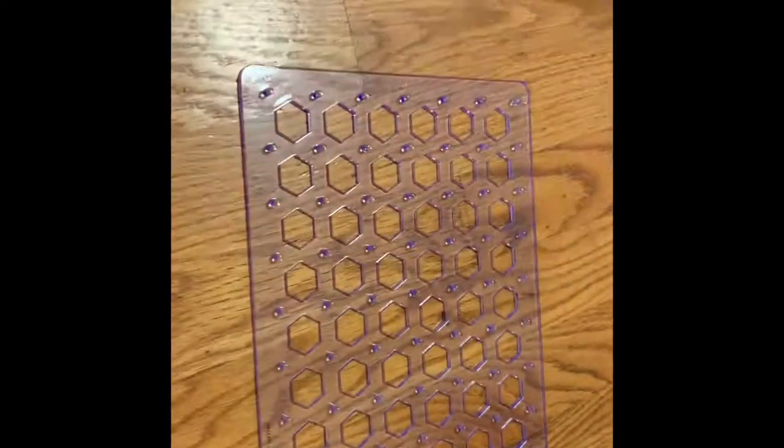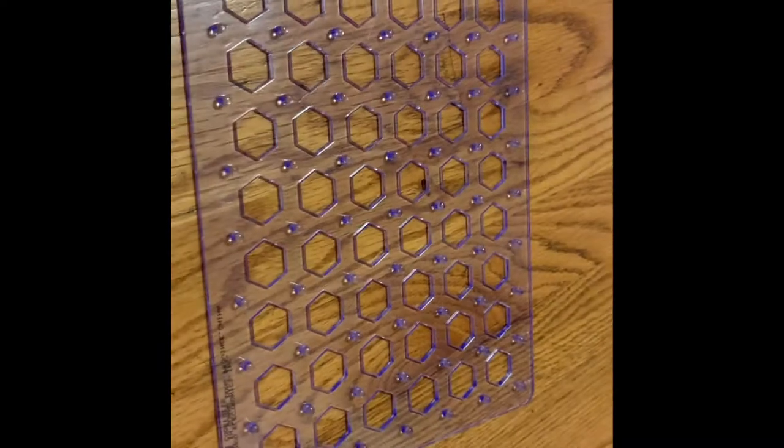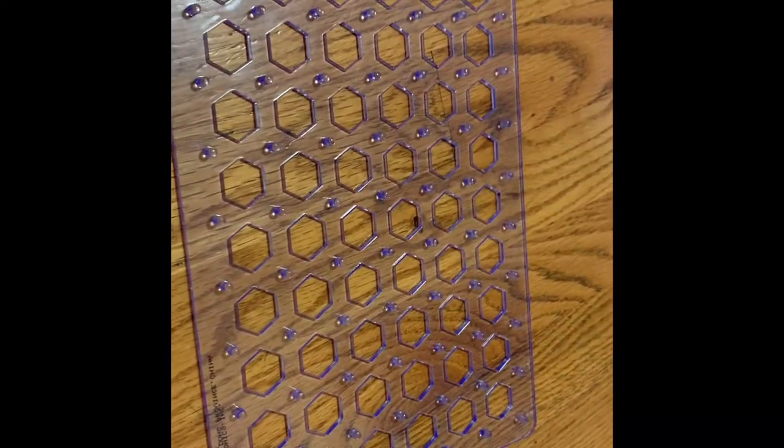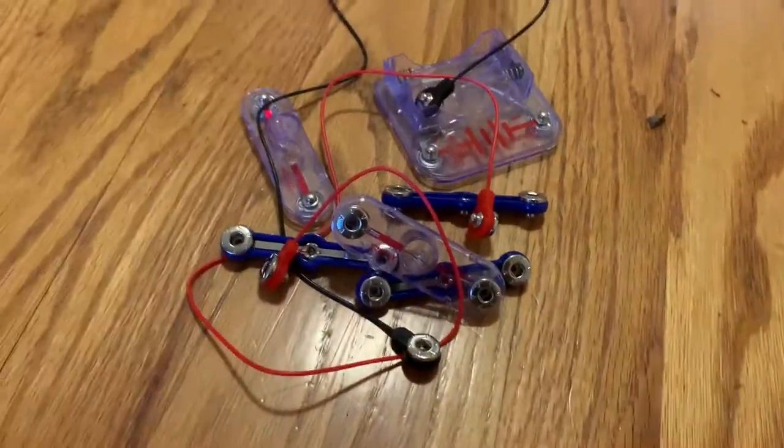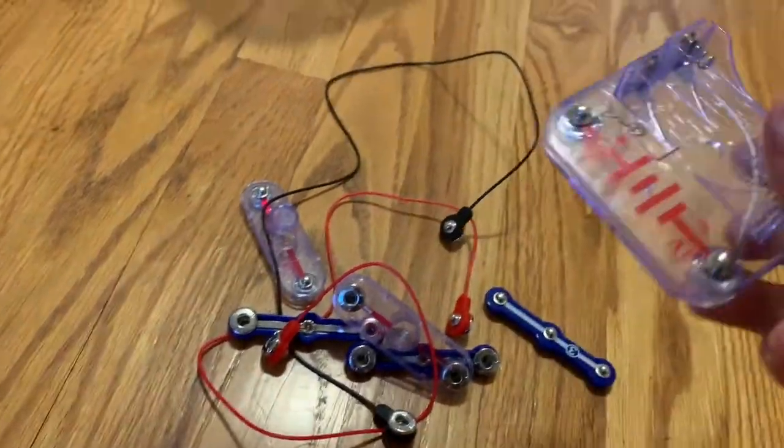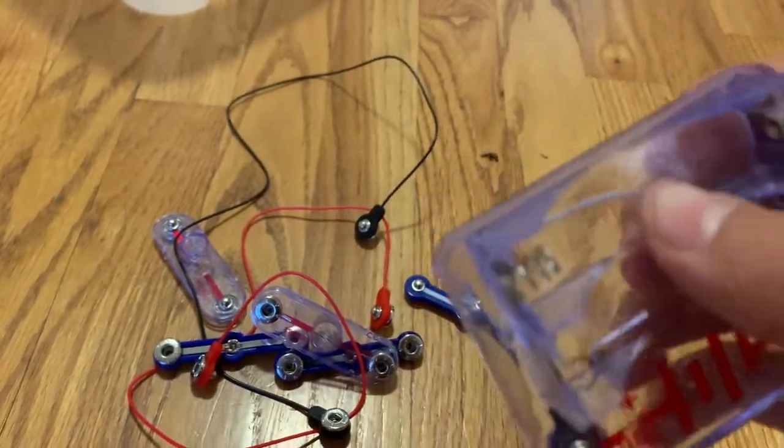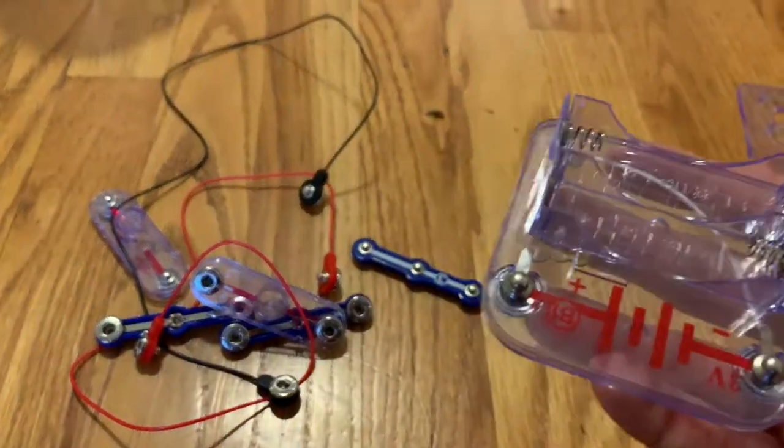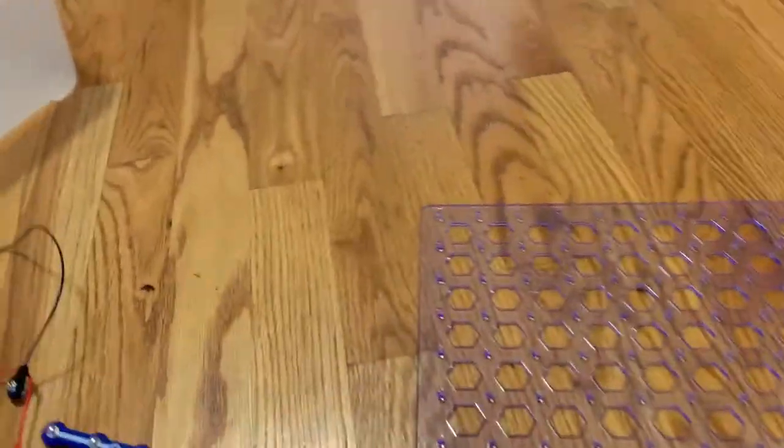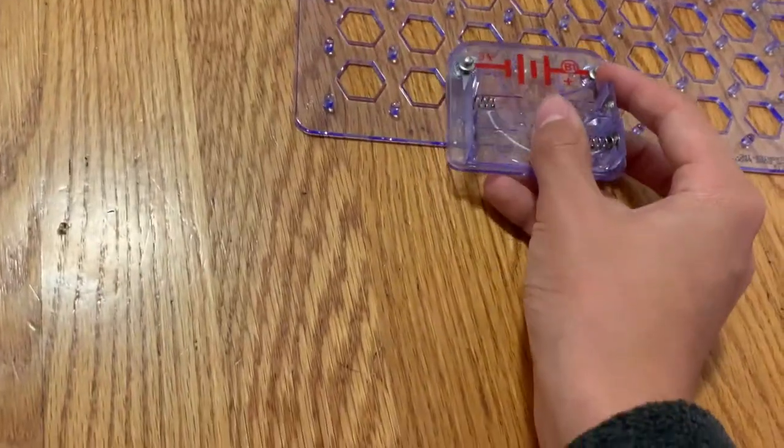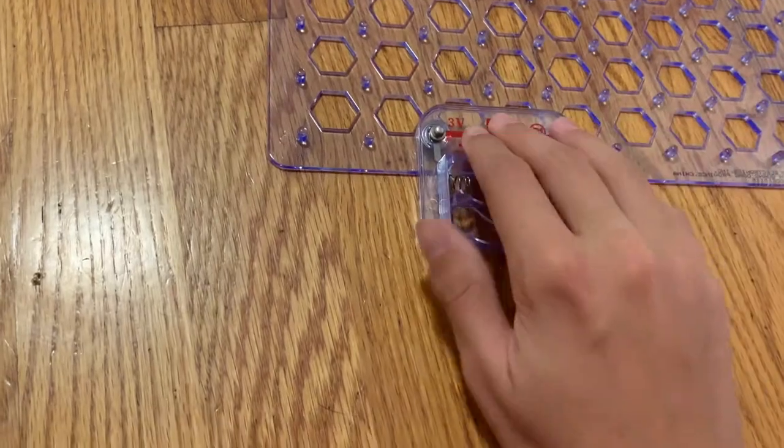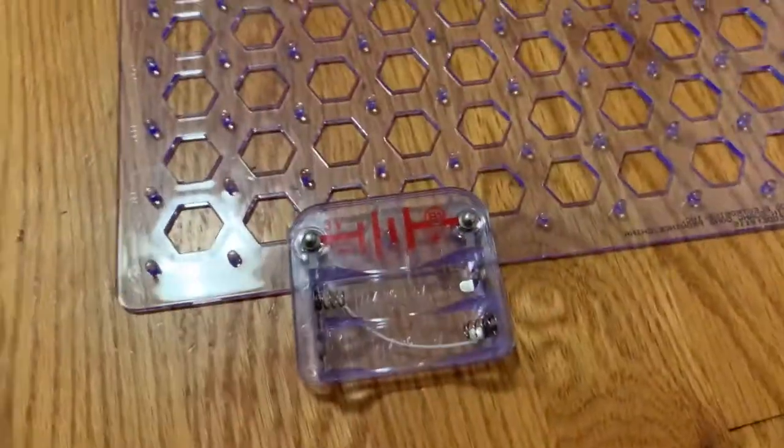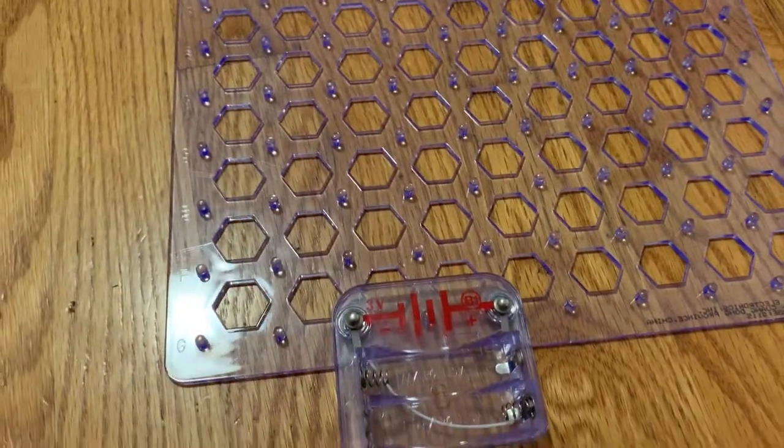So first what you're going to do is you're going to set down the plastic mat. And then you're going to look in your bag of parts. And so those are all the parts. And you're going to take this. This is the little thing you're going to need first. You're going to take that and you're going to put it right there on the little mat.